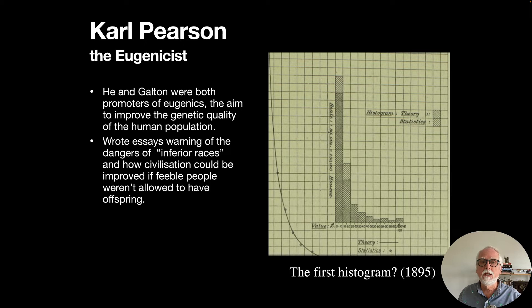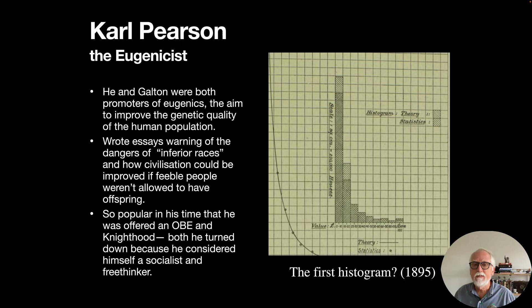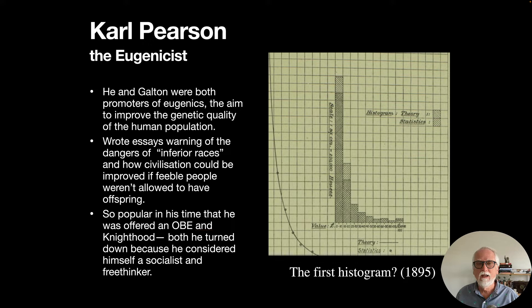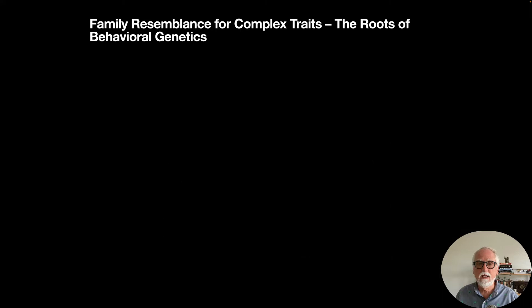Like Galton, Pearson was a eugenicist. Both wrote essays warning of the dangers of inferior races and how civilization could be improved if 'feeble people' weren't allowed to have offspring. These ideas now sound abhorrent, but at the time Pearson was very popular — he was offered an OBE and a knighthood, both of which he turned down because he considered himself a socialist and a free thinker. Interestingly, both Pearson and Galton were left-leaning people who thought they were trying to improve society.